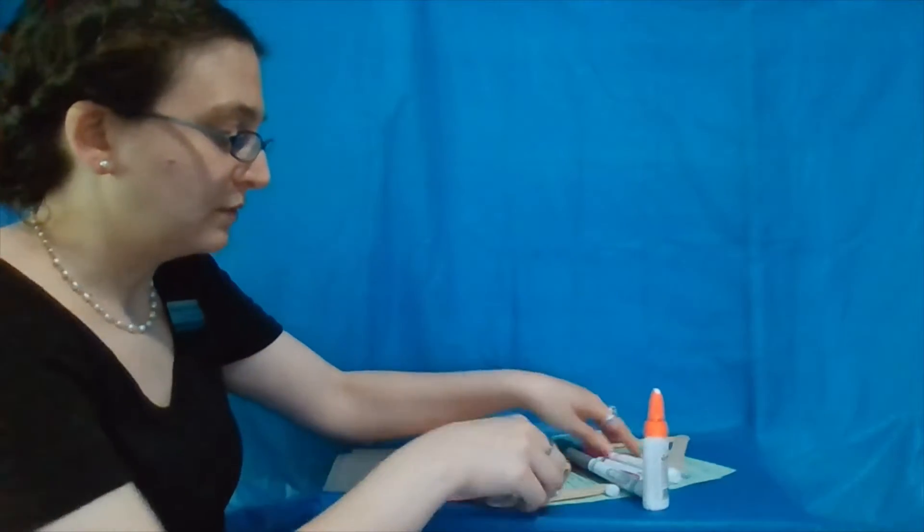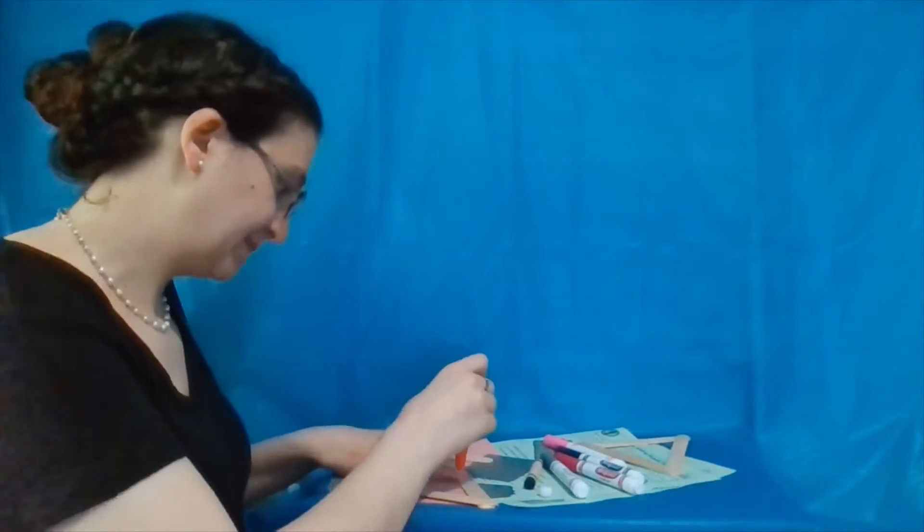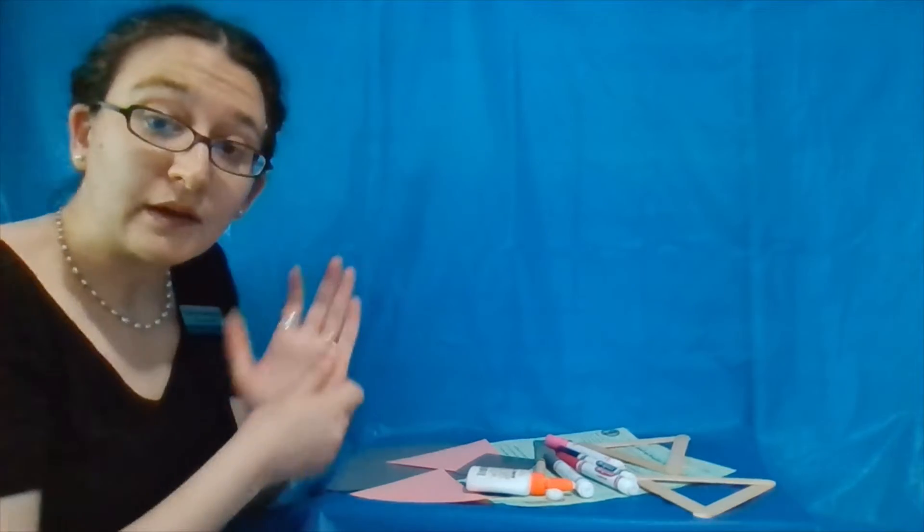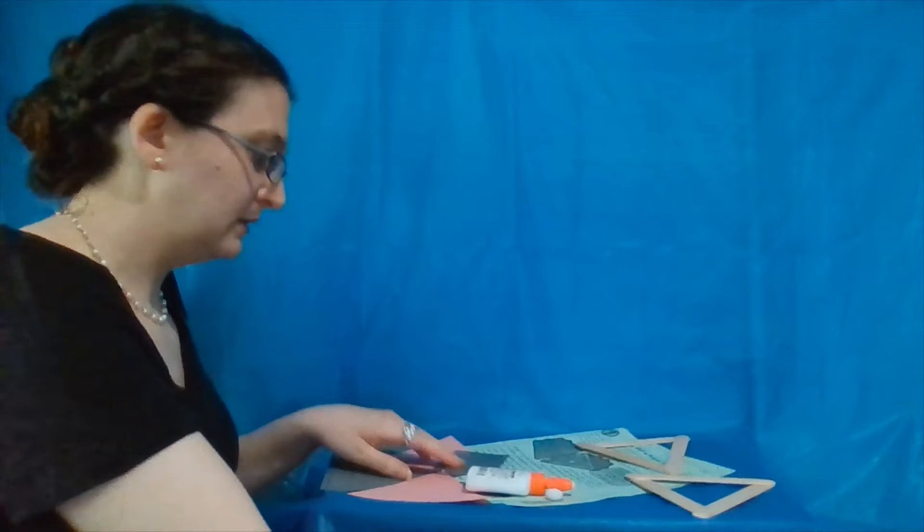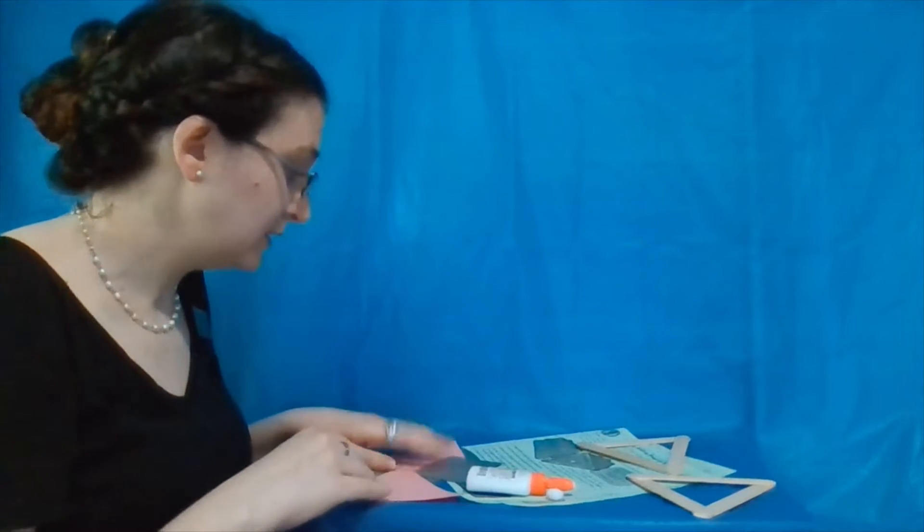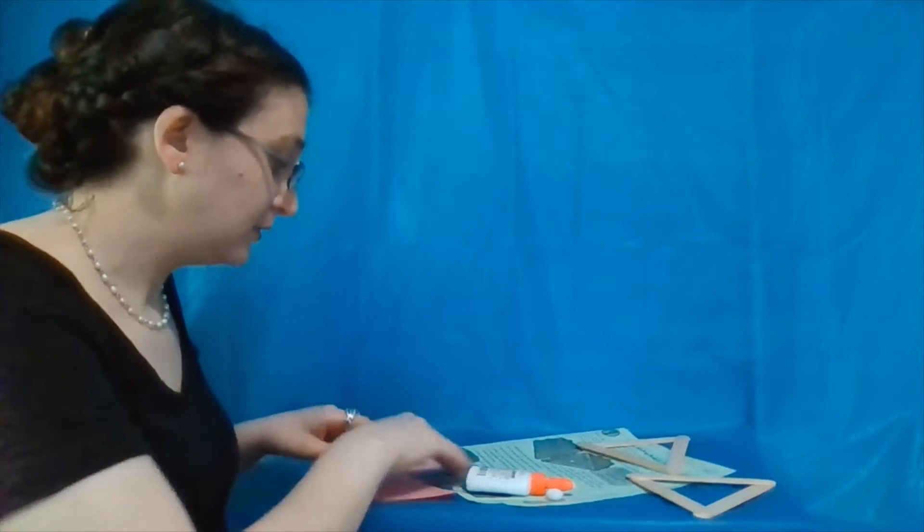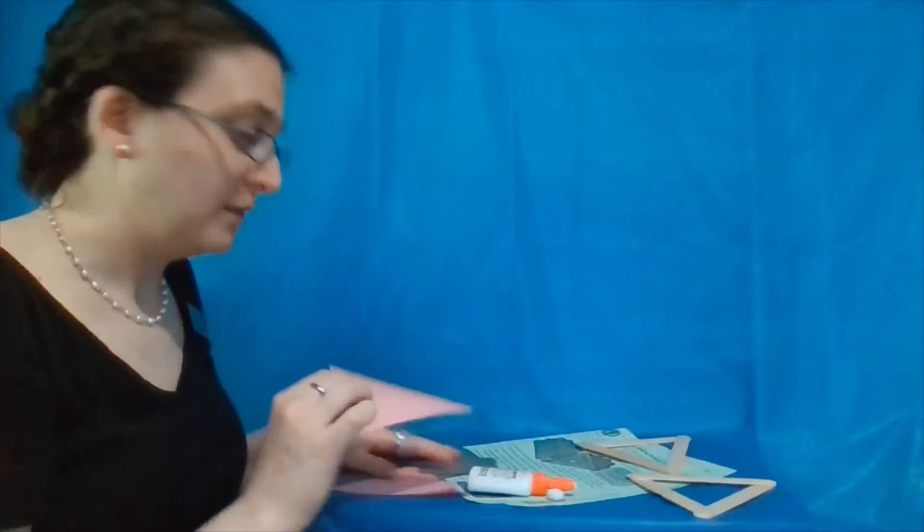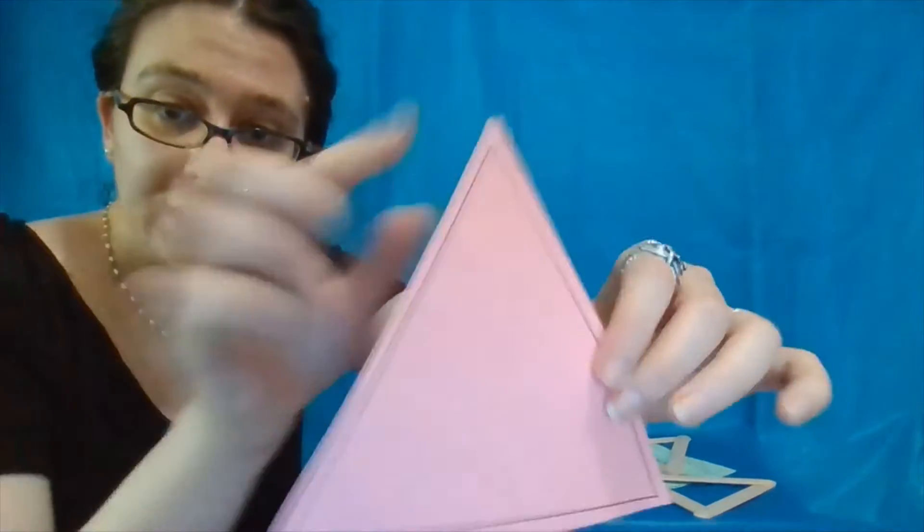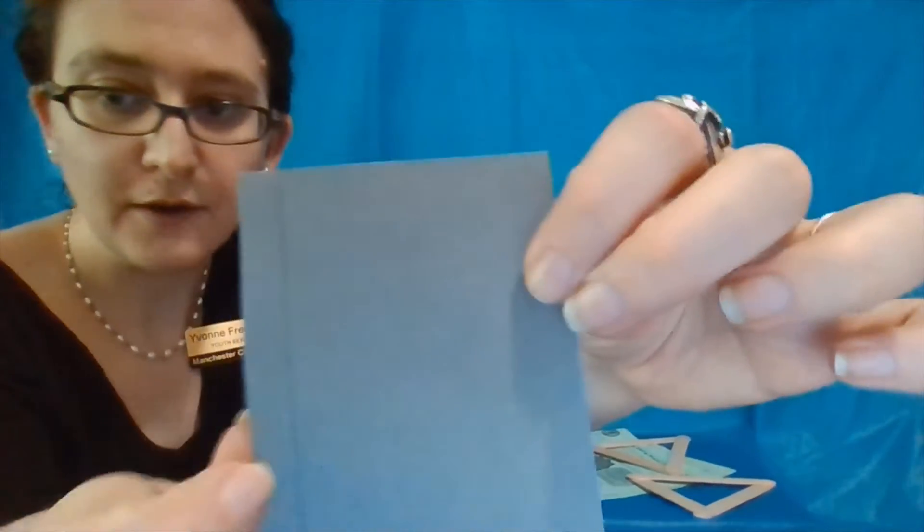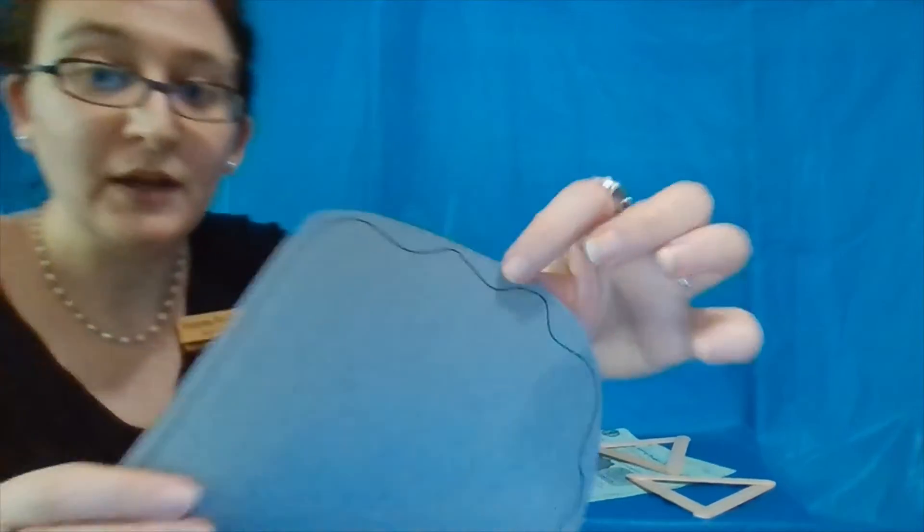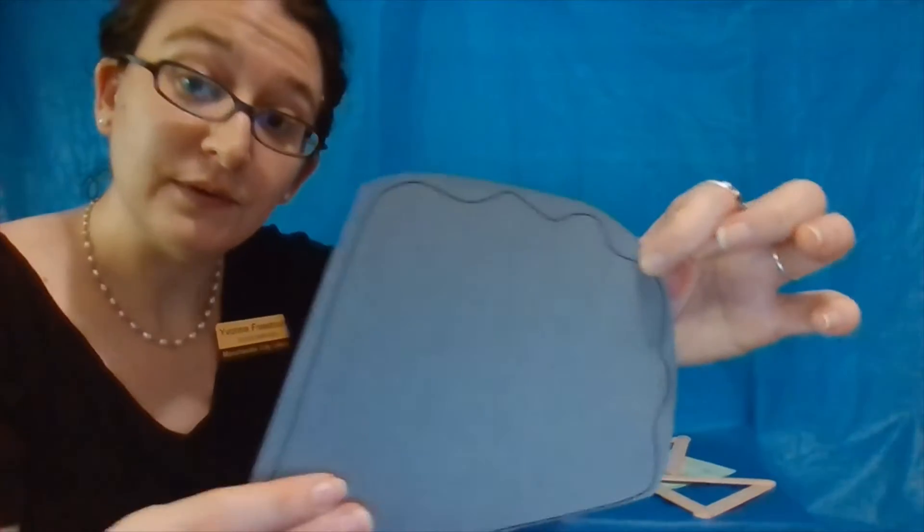We're just going to repeat with the second one. Now while those are drying, we're going to cut out the oyster shell and the two pink triangles. Some of it might look like it's kind of cut out already, but we really want to cut out right along the lines here.